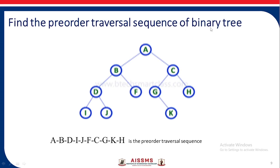Now the pre-order traversal sequence of this binary tree: A, then B, D, I, J, F. After completion of this left subtree we move to the right — it is C, G. There is nothing on the left side of root G, then move to the right: K. Then move to the right of C: it is H.